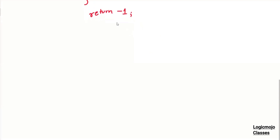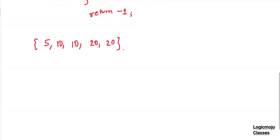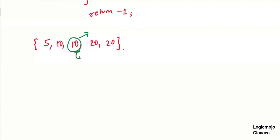Now let us think how we should approach this question using binary search. The only thing you have to keep in mind — let's take the above example: 5, 10, 10, 20, 20. You will do a binary search, keep on dividing and getting that element. Every time there will be two possible cases — either you will reach the first 10 or the second 10. Whenever you reach an element, if you see here this is an odd-length array, so if you do the mid, you'll get the second 10 element. Now, this mid is equal to X.